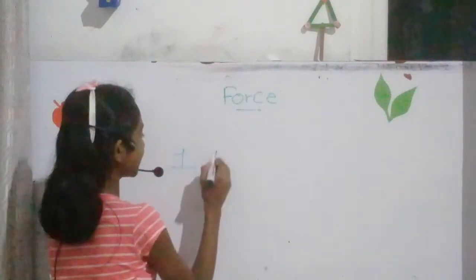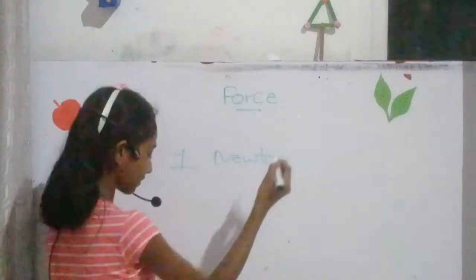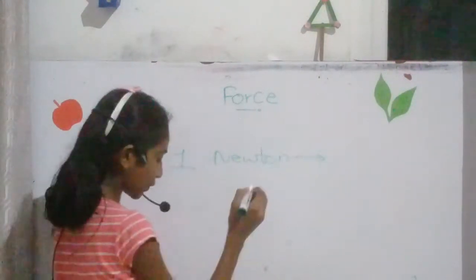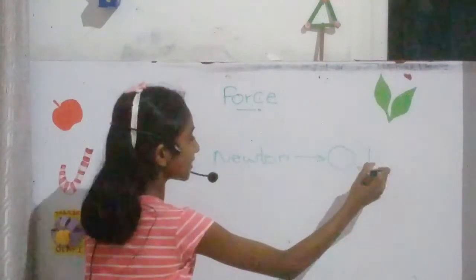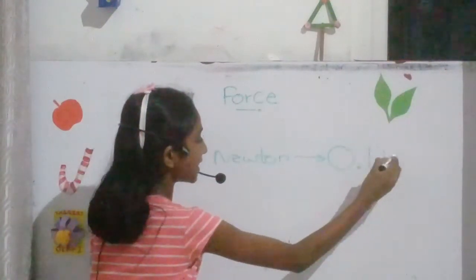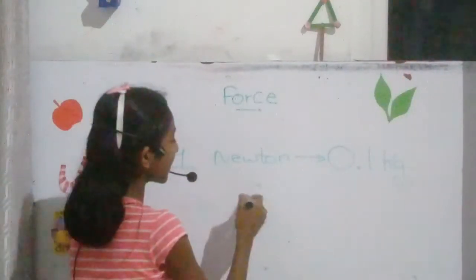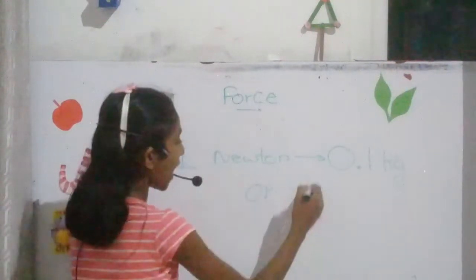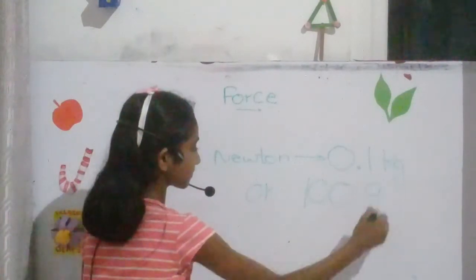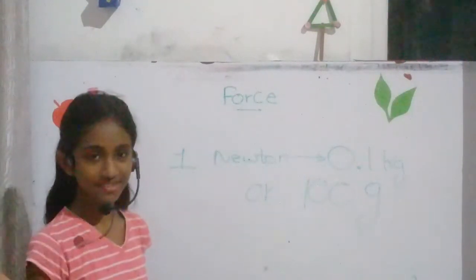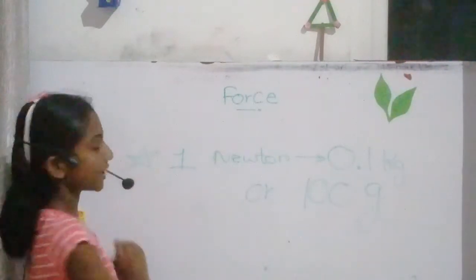For general knowledge: one Newton is equal to 0.1 kg, that means kilogram, or else 100 grams. This is very important to keep in mind.